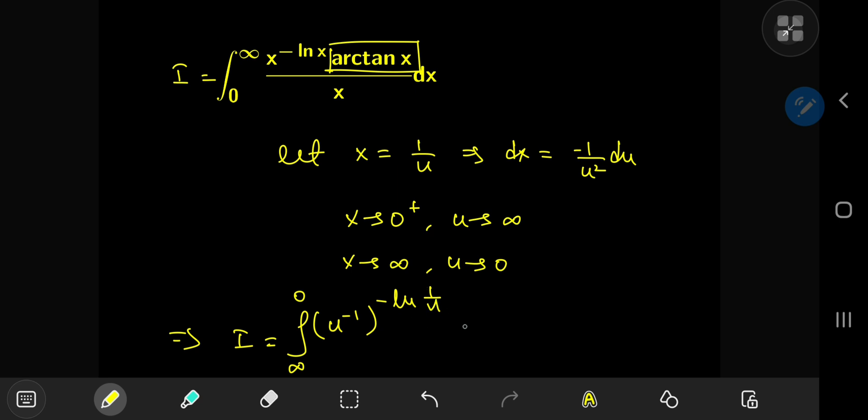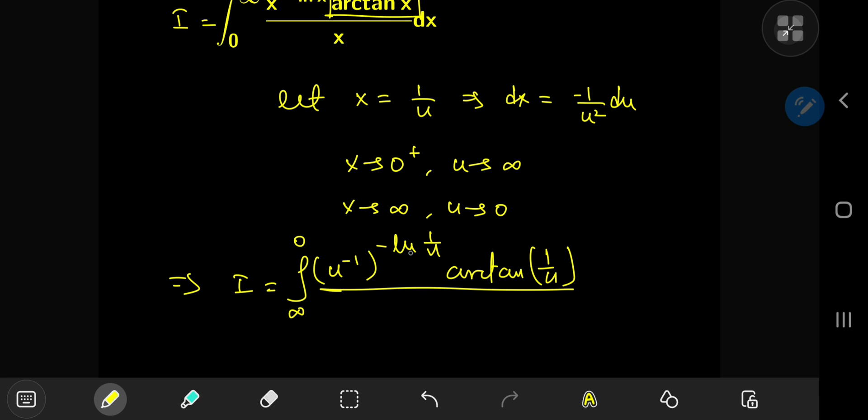And we have to multiply all of this stuff by the inverse tangent of 1 by u, and divide all of this by 1 by u, and the differential element translated to negative 1 by u squared du.